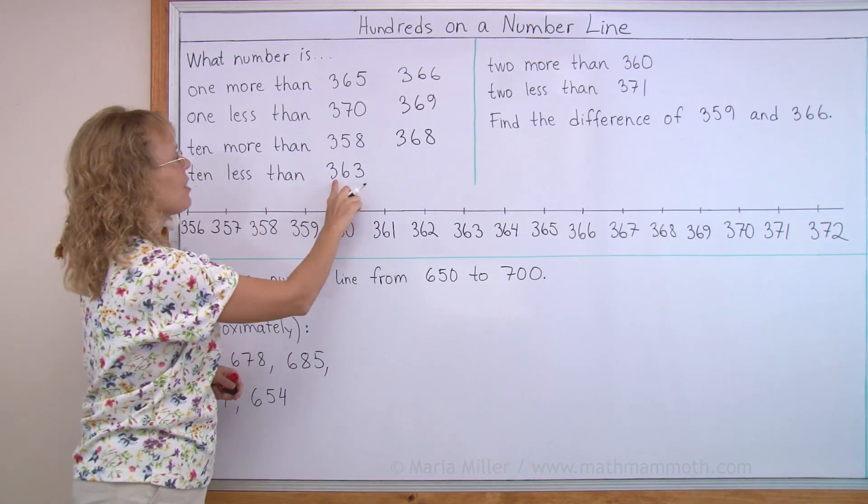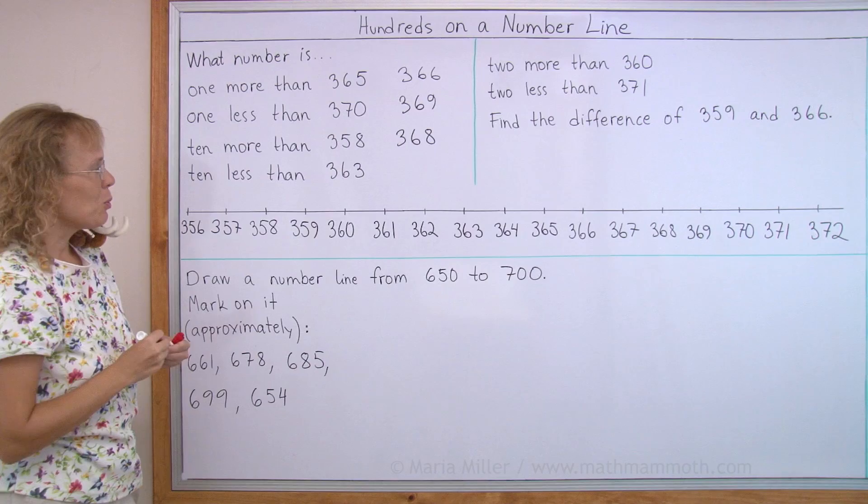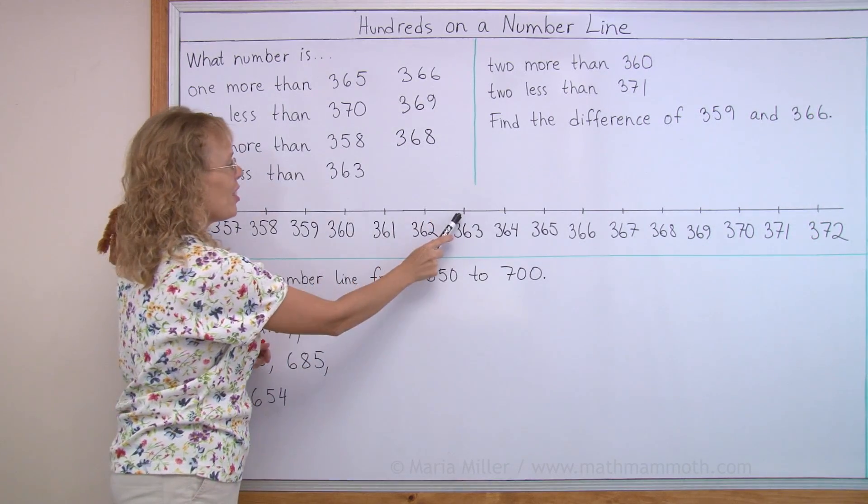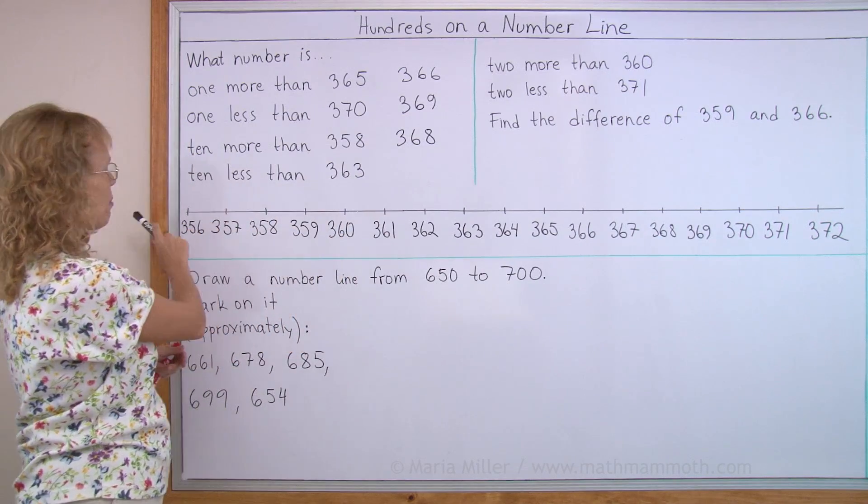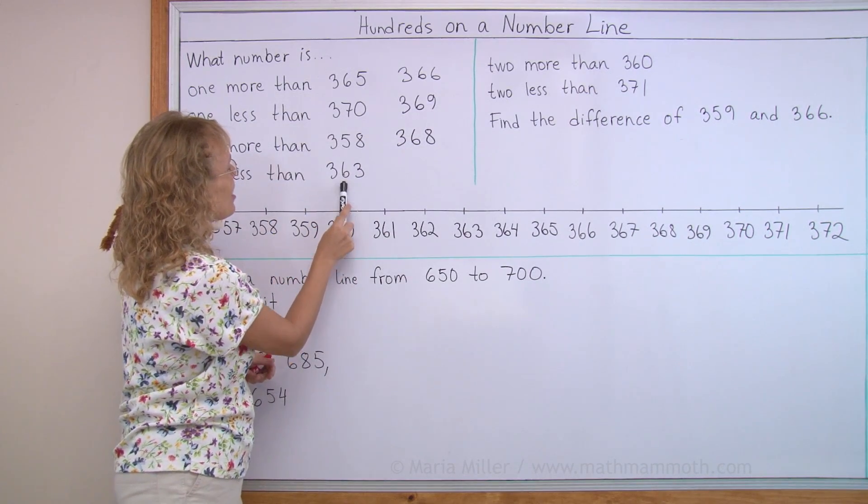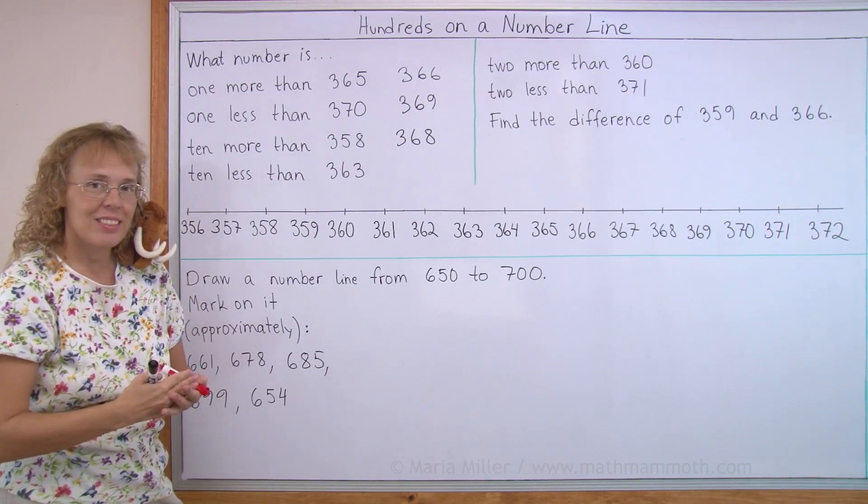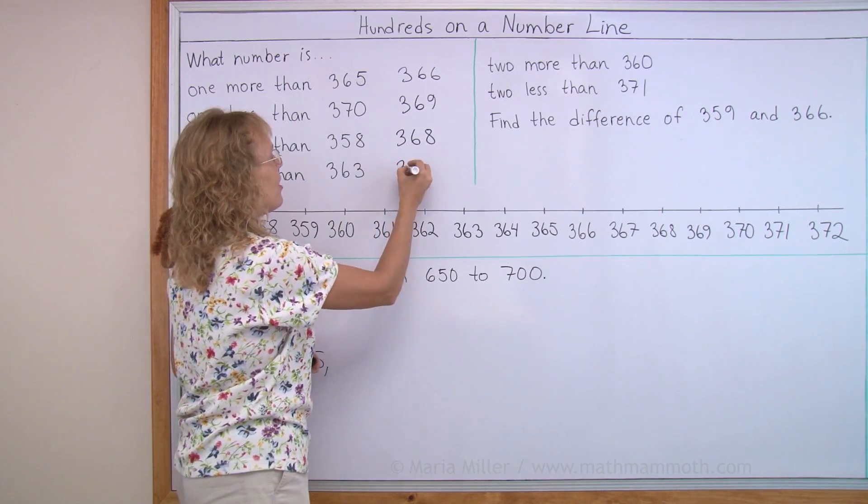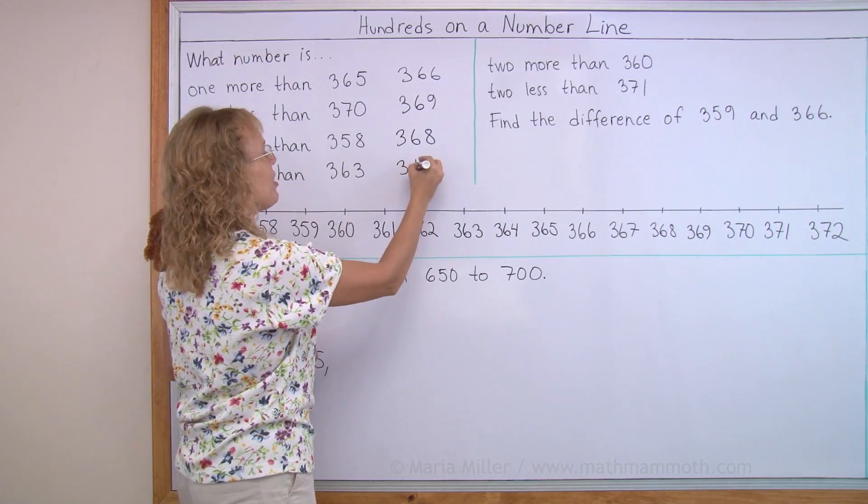10 less than 363, okay. I can go here and jump 10 backwards, except my number line doesn't reach that far. So I need to think of this 60. 10 less would be 300, and then instead of 60, 53.